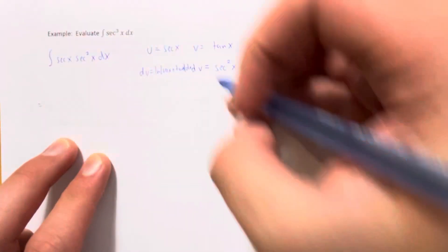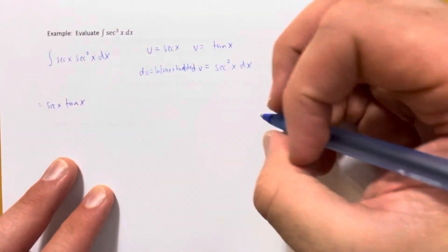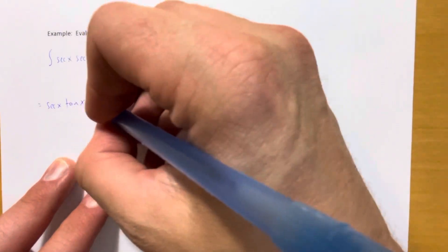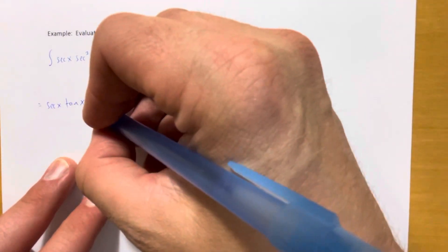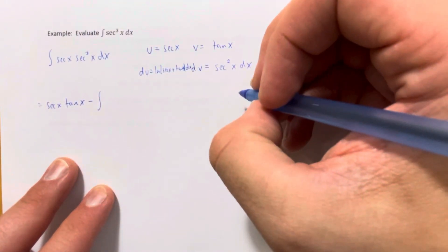Integration by parts gives us uv minus the integral of v du: that's secant of x times tangent of x minus the integral of v du.